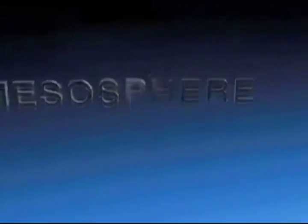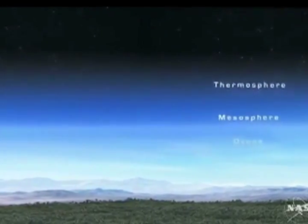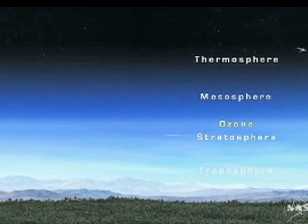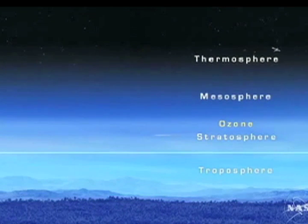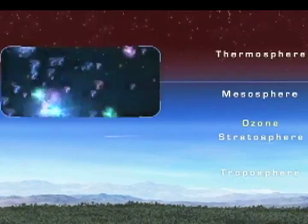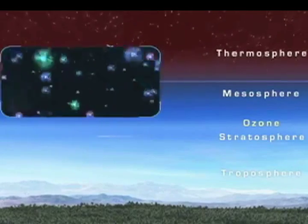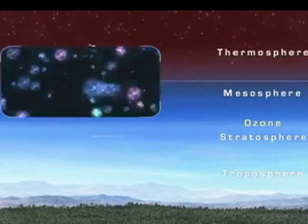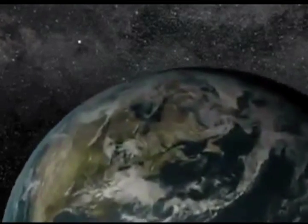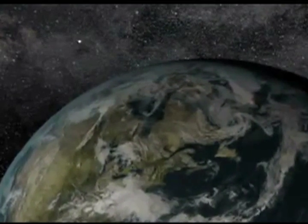The mesosphere gets its name from being in the middle sphere. The air at this level is very thin and the atmospheric pressure is very low. To give you an idea, 99.9% of the atmosphere's molecules are below this level, which means that only one-thousandth of all the atmosphere's molecules are above this level. While the percentage of nitrogen and oxygen is about the same as at the surface, the low air density would make it very hard to breathe.